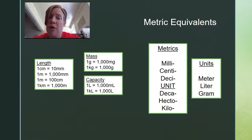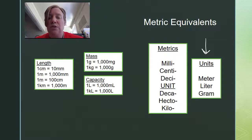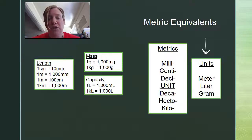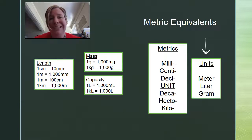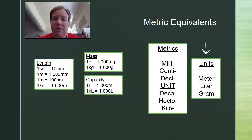So first of all, what are metric measurements? They're the ones that have to do with meters, liters, and grams, and we're going to refer to those as the unit. The unit is specifically whether we're measuring length — which is meters — capacity or volume — which is liters — or mass, which is similar to weight, and that's measured in grams. Remember, that's just the base unit.